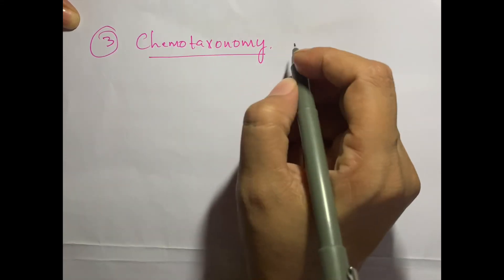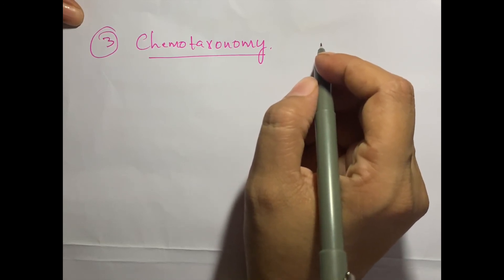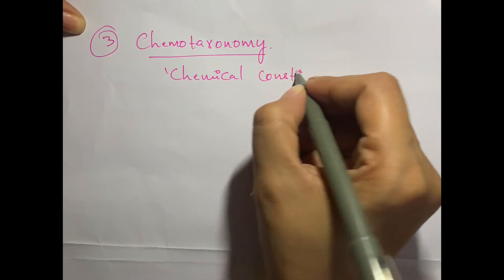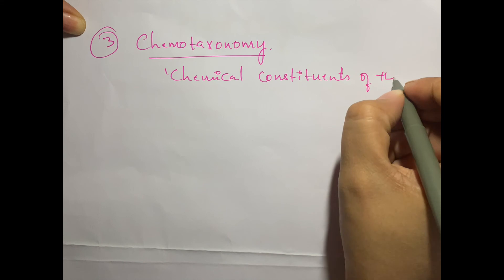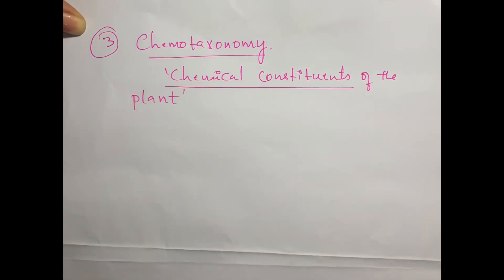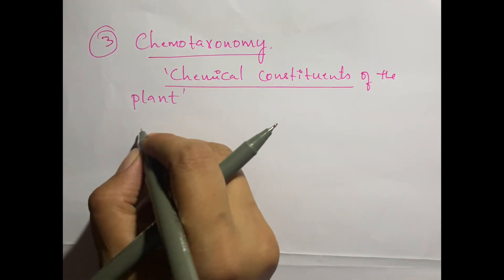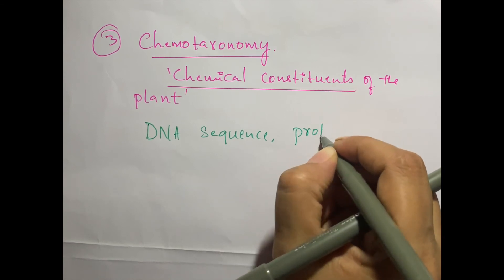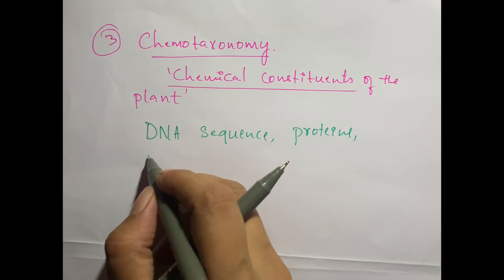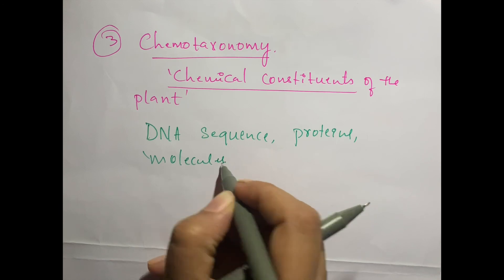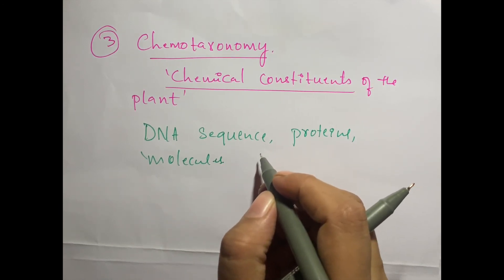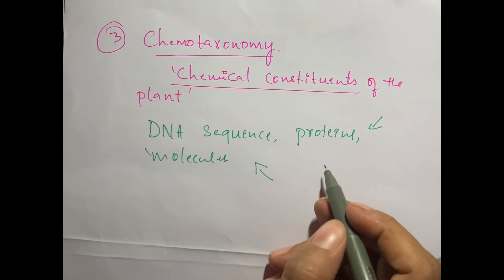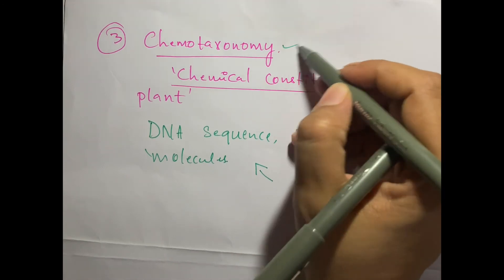The third method is Chemotaxonomy. This is mainly based on the chemical constituents of the plant — very, very important. Chemical constituents include, for example, DNA sequence and the nature of proteins. Different types of compounds or molecules present in plants are used by scientists to classify organisms. Production of a particular group of proteins or molecules will separate one group from another. This is how chemical constituents form the basis of chemotaxonomy.